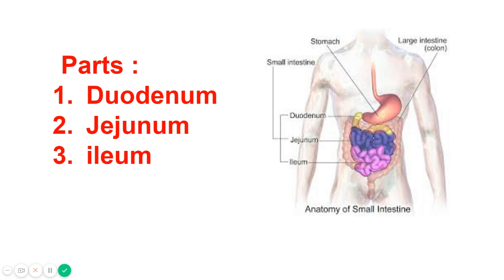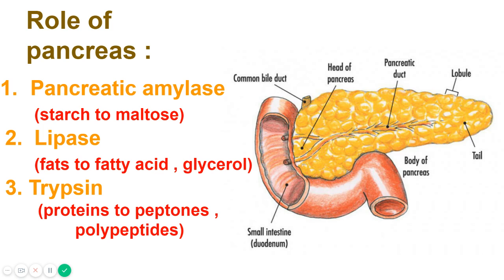Now let's see the role of the pancreas. This leaf-like structure is called the pancreas and it is beneath the stomach. The pancreas is a large gland and it produces juices that flow through the pancreatic duct into the duodenum.